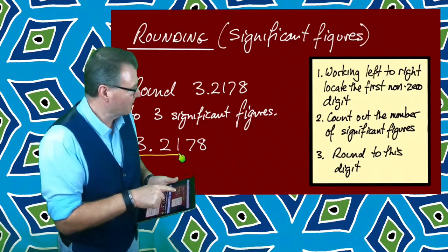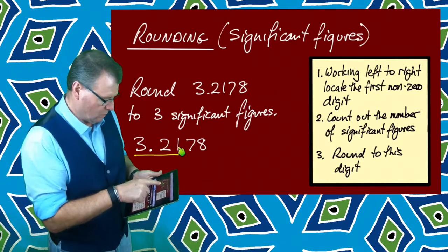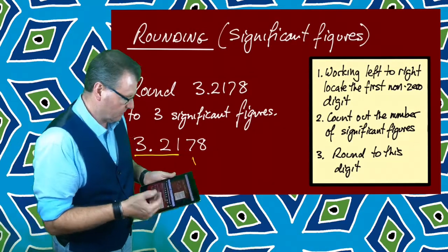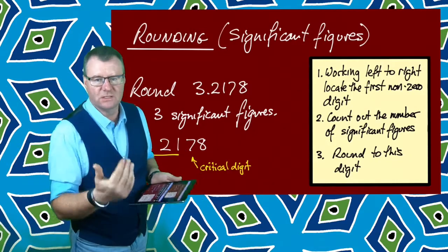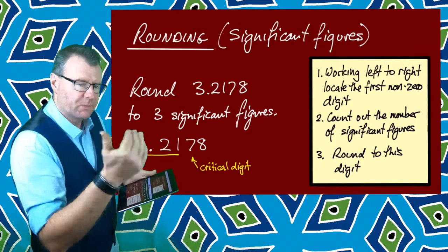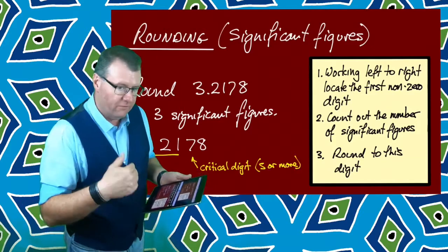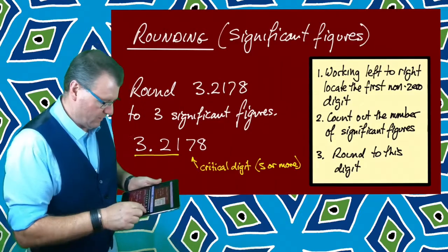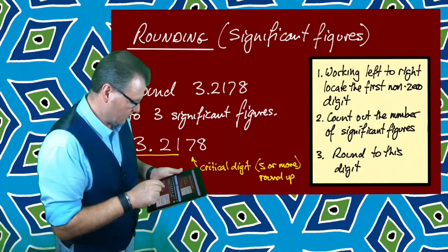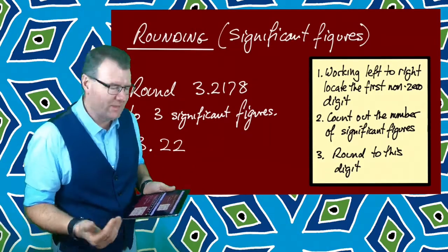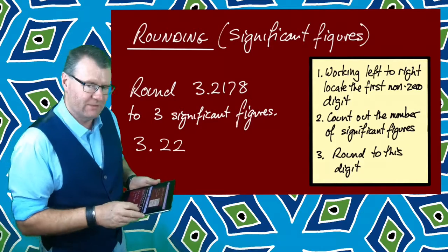Now all I have to do is decide: do I round this one up or leave it as is? That's when I look at the next number, that critical digit that decides if the rounding goes up or if you leave things as they are. In this case it's seven, which is five or more, so I round that up. My 3.21 becomes 3.22, and I've rounded that to three significant figures.